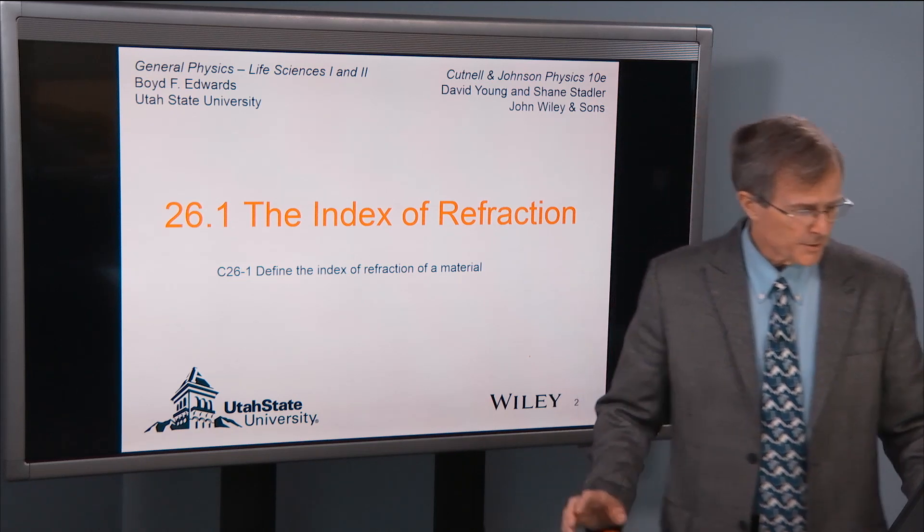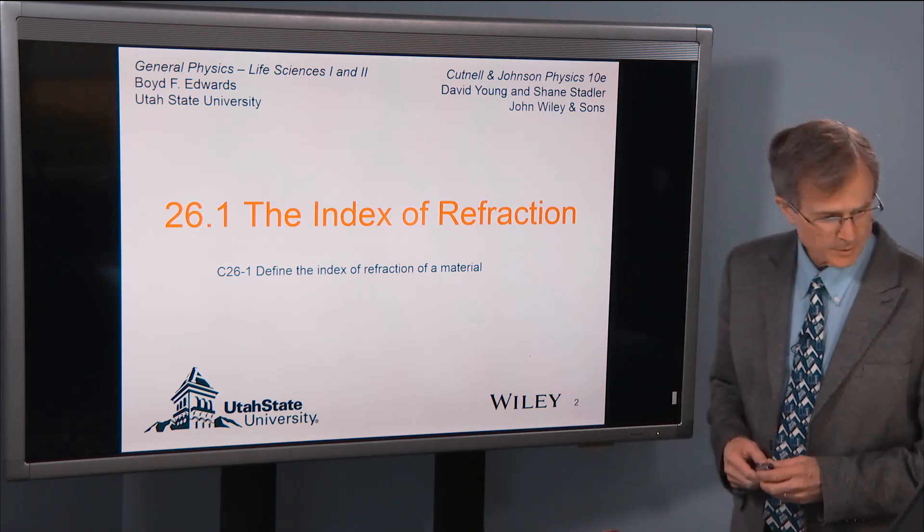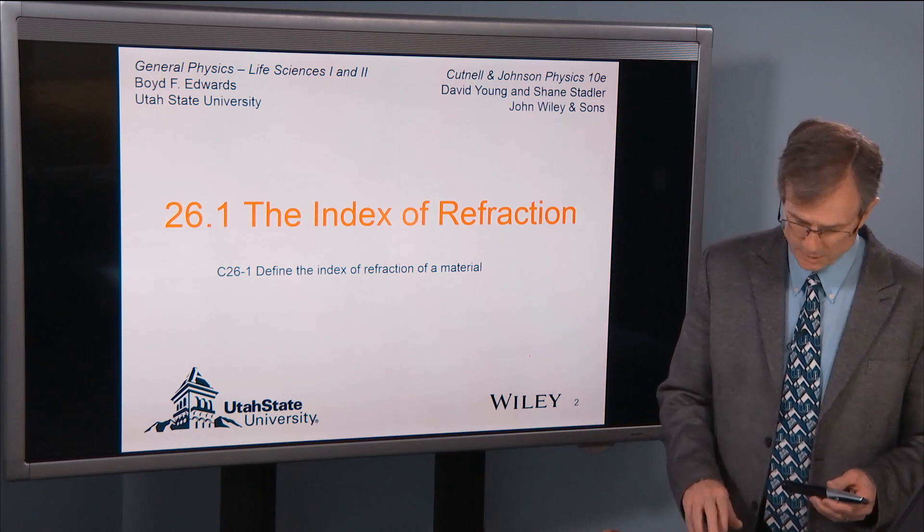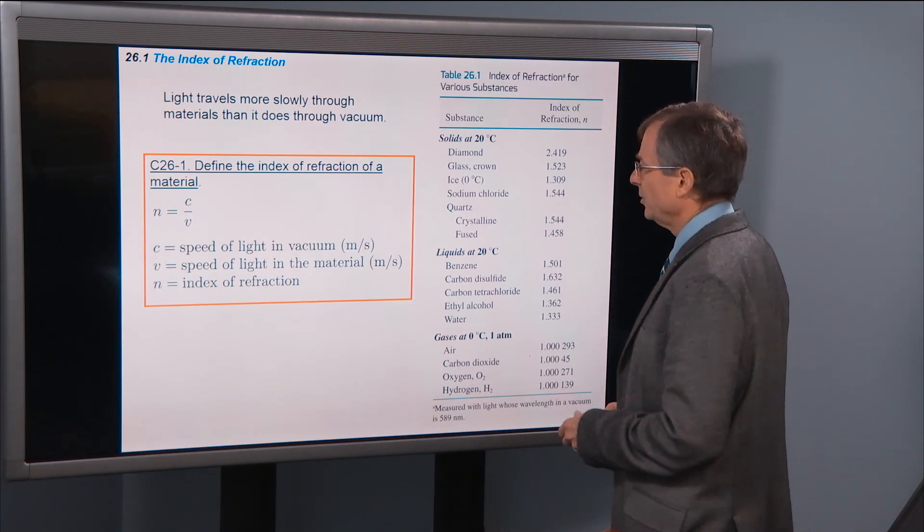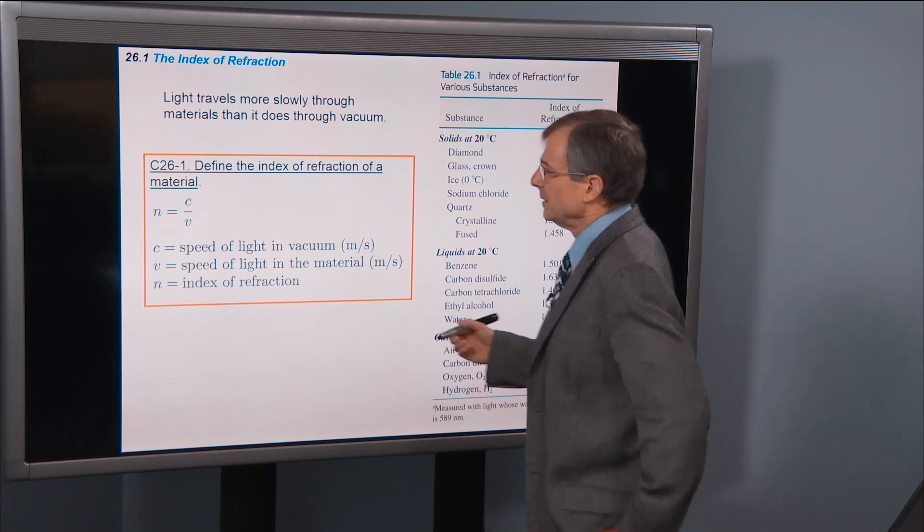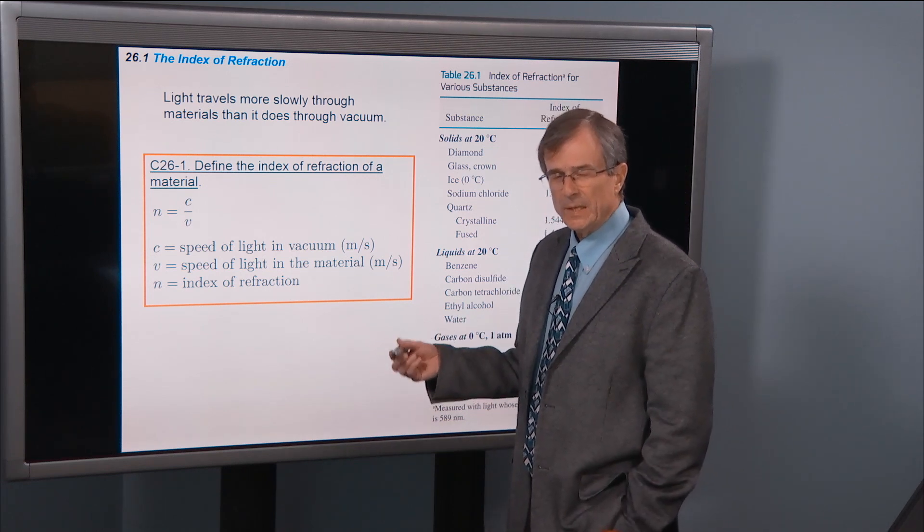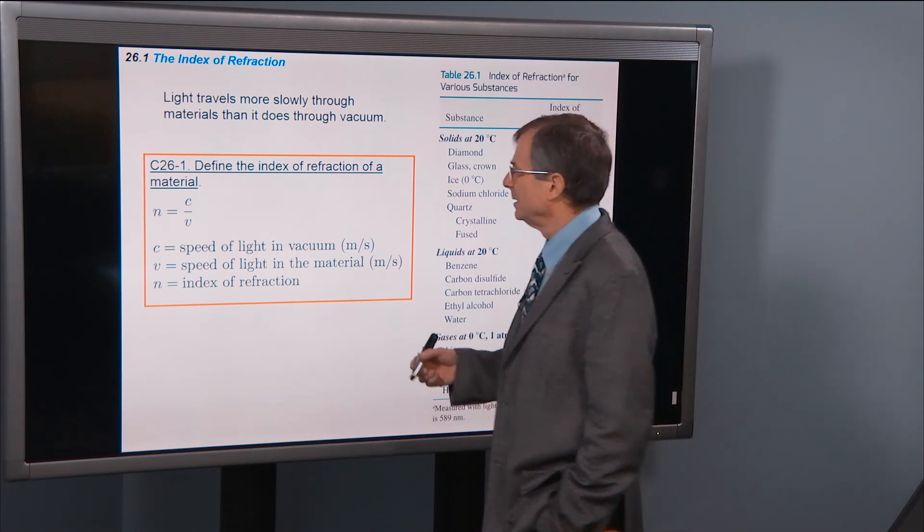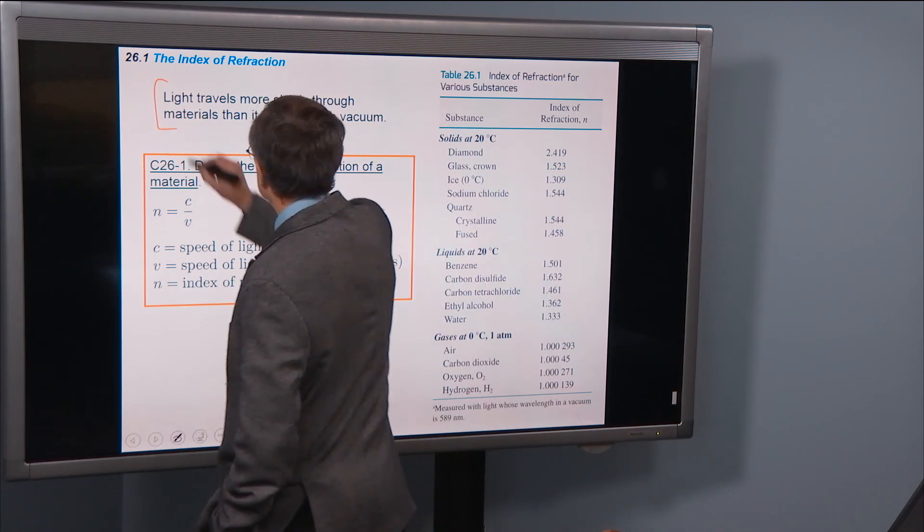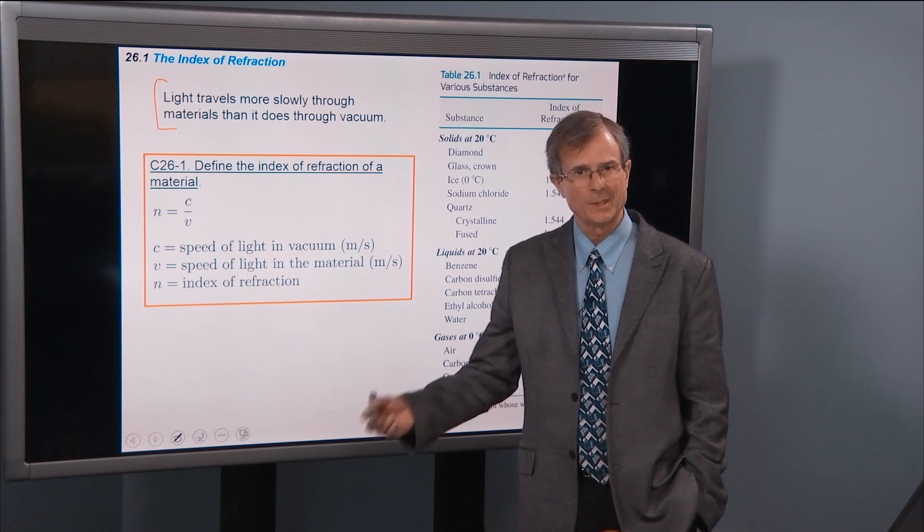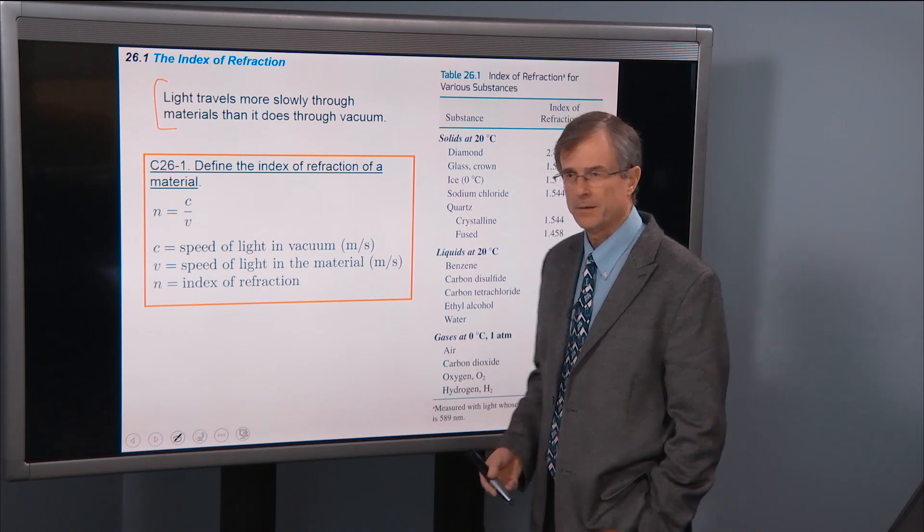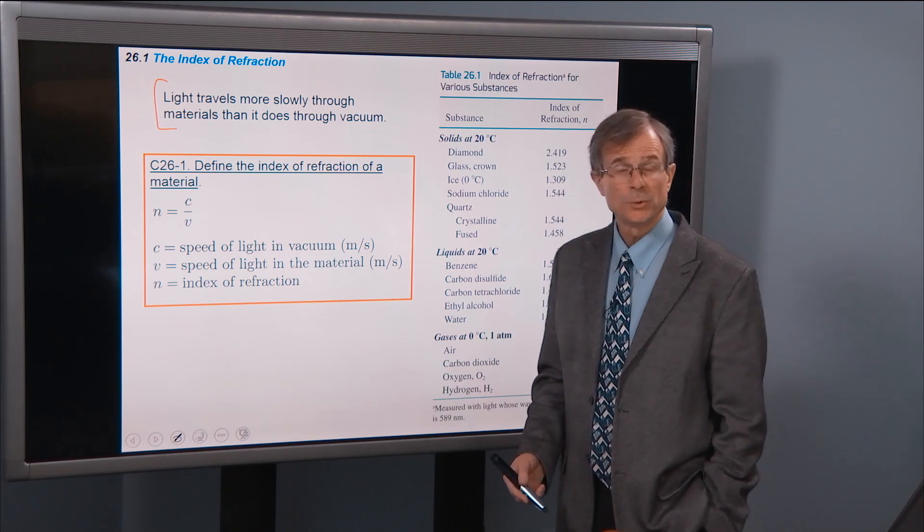The index of refraction is the first thing we'll cover in the chapter. We will define the index of refraction. The most important piece of information here is that light travels more slowly through materials, such as glass, water, etc., than it does through vacuum.